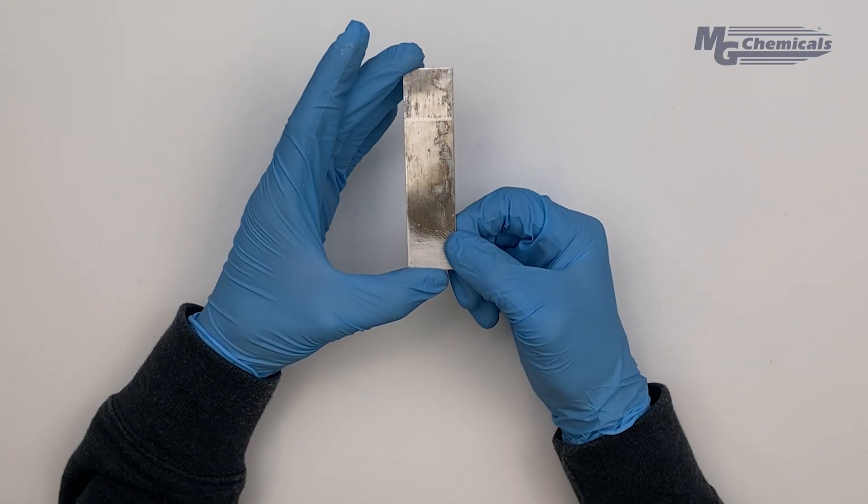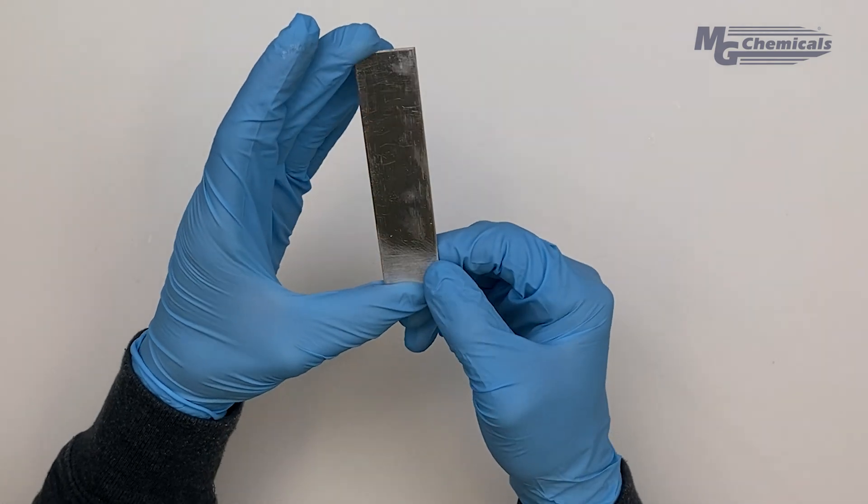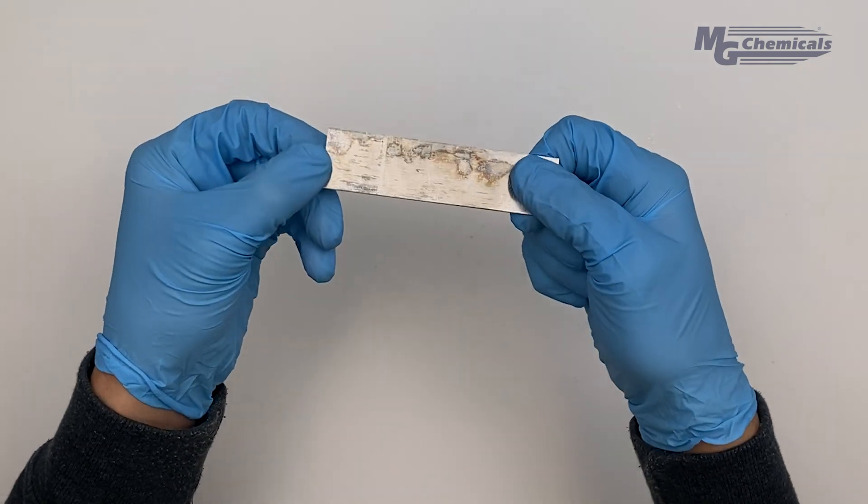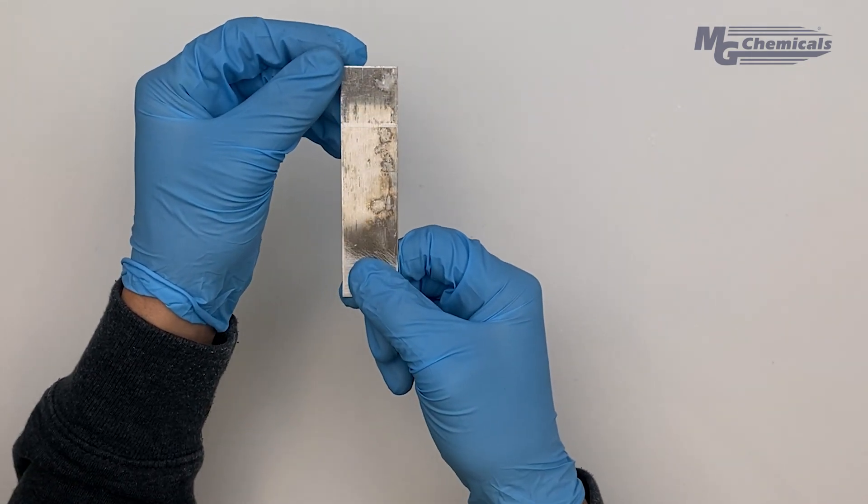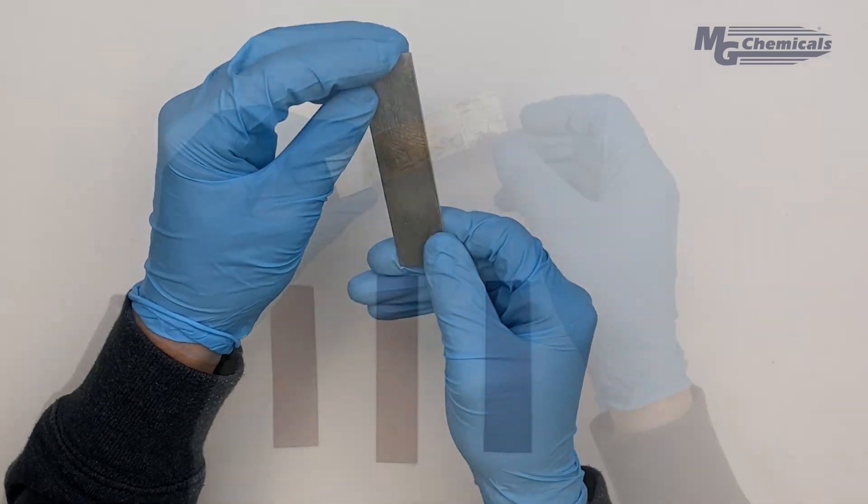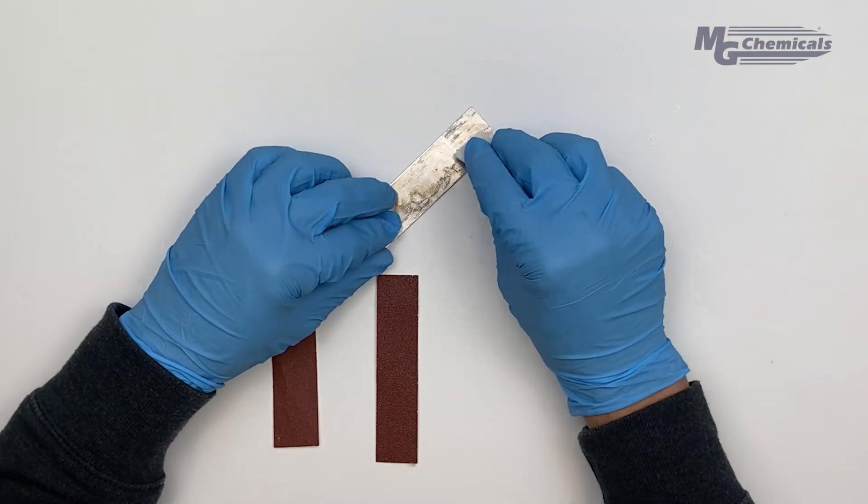First let's address the issue of substrate cleanliness and preparation as these are vital parameters when it comes to bonding. To achieve a high bond strength add surface texture to the substrate using a high grit sandpaper.